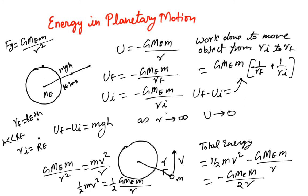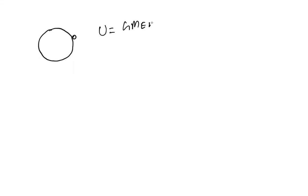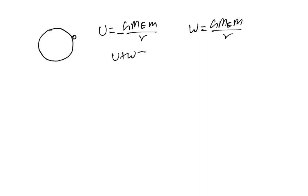On the surface of the earth, U = -GMe*m/r, which is negative. To free the body, you need to do work W = GMe*m/r, so that U + W = 0, making the potential energy zero and freeing the mass.